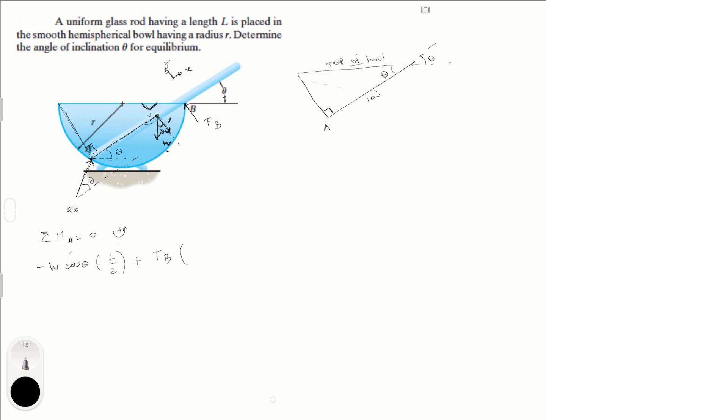You know that the top of the ball, which is a hypotenuse of this triangle, has a distance of 2R. Therefore, the rod has a length of 2R times cosine of theta. So that's 2R cosine of theta.